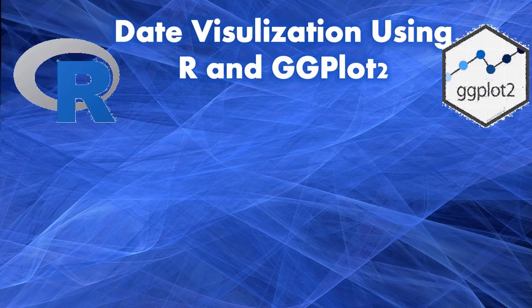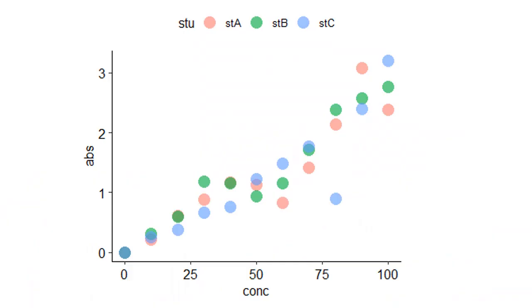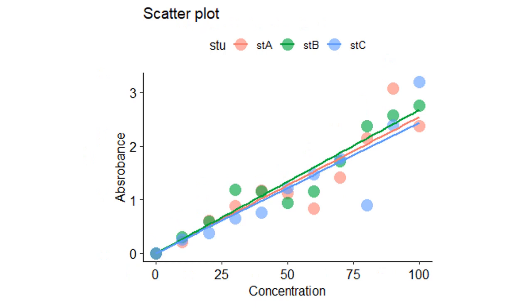Hello friends, welcome to this session on R data visualization with ggplot2. I am doing the scatter plot video again. Scatter plot is a very basic plot type used to visualize the relationship between two numeric variables. This relationship can be linear, quadratic, or others. By visualizing this relationship, we can decide on a statistical model and use it to predict values of one variable using values of another.